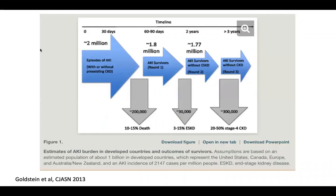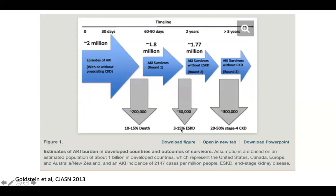This schematic shows all comers with AKI and what happens over time. Within the first 30 days, about 10 to 15% of hospitalized patients will pass away — many from more severe AKIs. In the one-to-three month phase, a large portion of survivors will recover, but a minority — not an insignificant number — will develop end-stage renal disease requiring dialysis. Among the 1.7 million survivors at two years, a significant number will have advanced CKD. These people need to be followed over time.